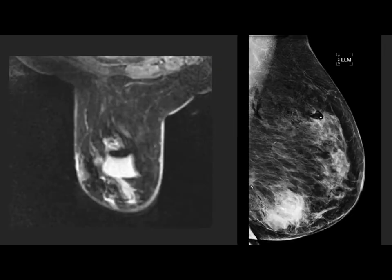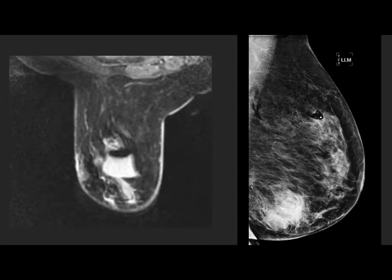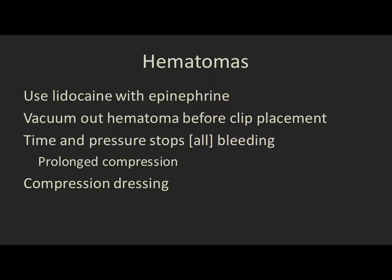Challenge number eleven: hematomas. Hematomas happen a lot more with MR-guided biopsies than with stereos or ultrasound-guided biopsies for a couple of reasons: one, we tend to take more biopsies — conventionally at least 12 for MR-guided biopsies; and second, the patient's breast is not being compressed for a protracted period of time when they're in the scanner, so you're more likely to get a hematoma. I would definitely recommend using lidocaine with epinephrine for MR-guided biopsies. If I see a hematoma on my post-biopsy sequence, I'm going to go back in and vacuum it out before I put the clip in. Prolonged compression is really important after MR-guided biopsies, followed by placing a compression dressing.